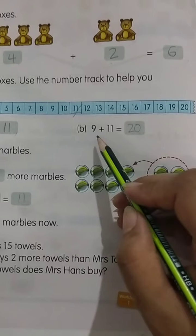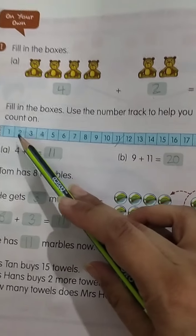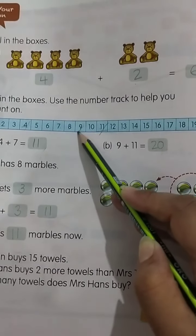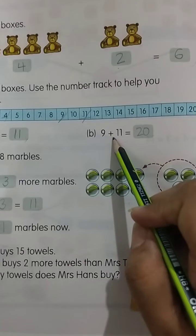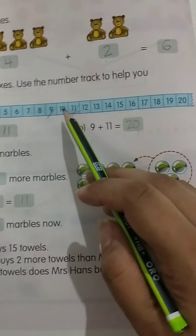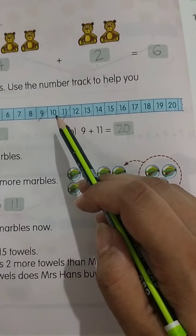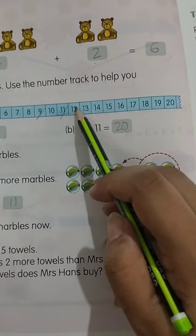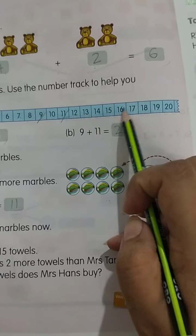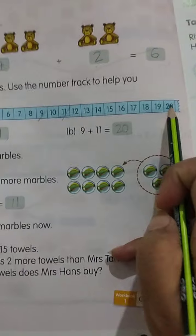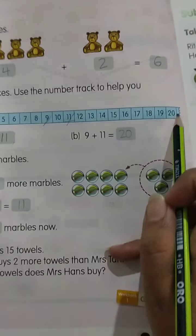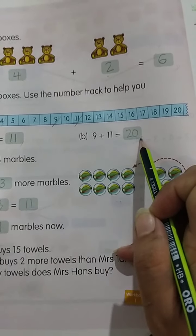Same this one. 9. 1 سے لے کر 9 تک plus 11. اس میں 11 اور ڈالنے آپ نے 9 کے ساتھ, add کرنے ہیں 11. 1, 2, 3, 4, 5, 6, 7, 8, 9, 10, 11. 1 سے لے کر 11 تک پوری counting آ رہی ہے تو answer آئے گا 20.